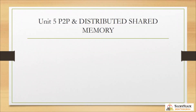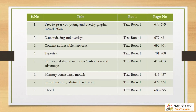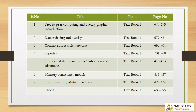Unit 5 is P2P and Distributed Shared Memory. Peer-to-Peer Computing and Overlay Graphs — Introduction pages 677 to 679, Data Indexing page 681, Content Addressable Networks (CAN) pages 695 to 701, Chord pages 688 to 695, Tapestry pages 701 to 708. Distributed Shared Memory — Abstraction and Advantages pages 410 to 413, Memory Consistency Models pages 413 to 427, Shared Memory Mutual Exclusion pages 427 to 434.